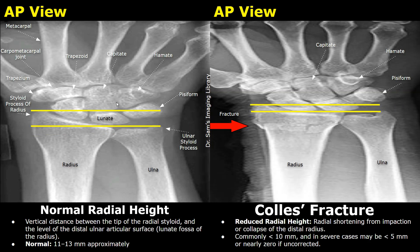The radial height can be measured by drawing a straight line that touches the radial styloid process and a second straight line that touches the lunate fossa of the radius. We can measure this vertical distance — normally between 11 and 13 millimeters. A reduced radial height indicates radial shortening from impaction or collapse of the distal radius. In this image you can see the overriding of the distal fracture fragment — this is an impacted Collis fracture. Usually this distance is less than 10 millimeters in a fracture, but in severe cases it can be below 5 millimeters or even 0.